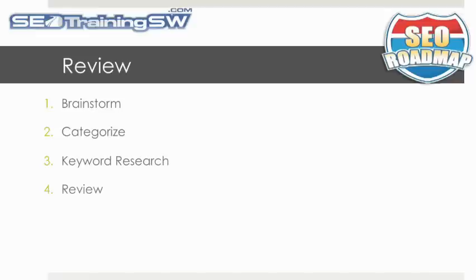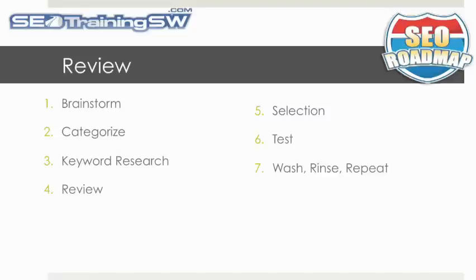Four: Review — we will then review the various keywords and sort them on the volume of search, the competitiveness, and remove words from our list that may not have enough search volume, are too competitive, or are just not relevant to our website. Five: Select — we will then go through our list and, based upon the rule of five, select the keywords that we will target in the launch of our new campaign. Six: Test — we will then test the keywords for conversion using PPC to make sure that they can make us money before we begin our SEO campaign. Seven: Wash, rinse, and repeat.